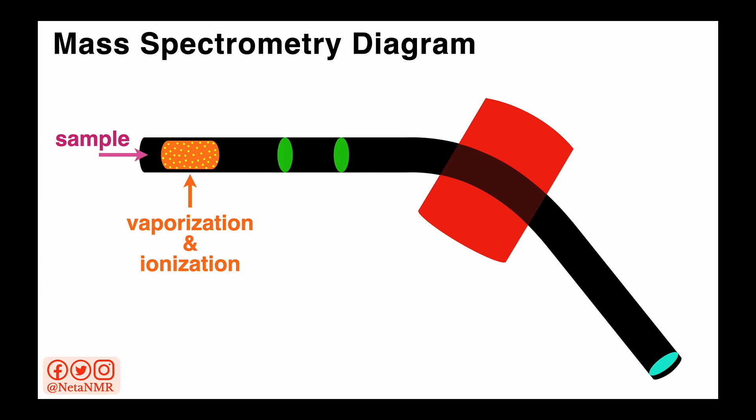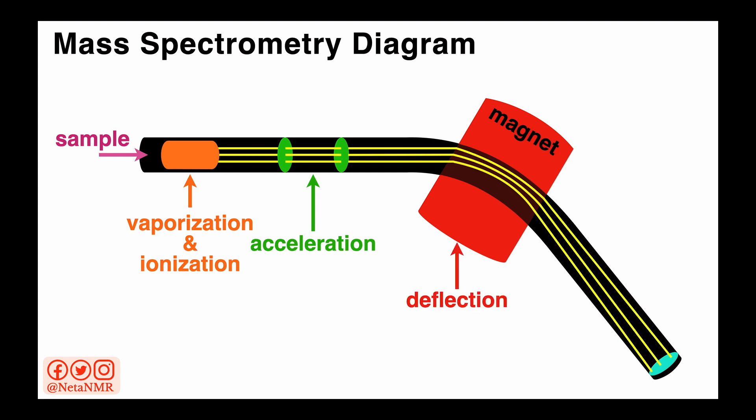This ionizes them and gives them a charge. Once the sample is ionized, then the ions are accelerated and they move very fast, and they enter a magnetic field. The purpose of passing these ionized sample beams through the magnetic field is to deflect them based on their charge and mass.